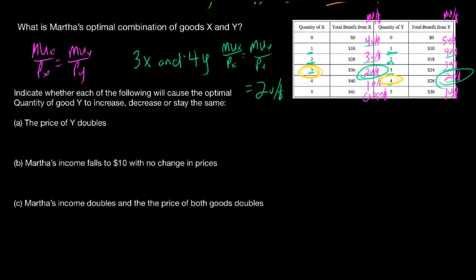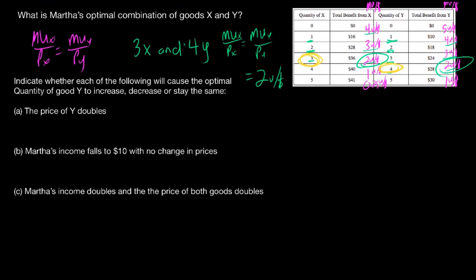Now, will each of the following cause the optimal quantity of good Y to increase, decrease, or stay the same? First: the price of good Y doubles. If the price of Y doubles, the marginal utility per dollar for Y will halve — doubling the denominator cuts the ratio in half. Martha will receive less utility per dollar from good Y, so she will decrease her quantity of Y.